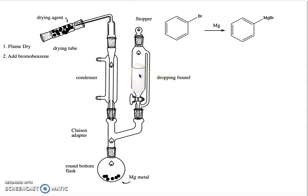We add the dry ether in the same way using the graduated cylinder and adding it as carefully and as quickly as possible. So this is a mixture of bromobenzene and ether that gets added to the magnesium metal.